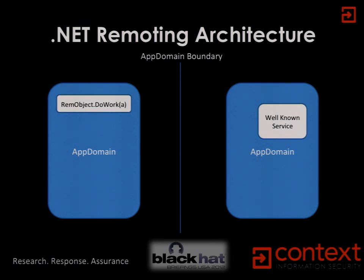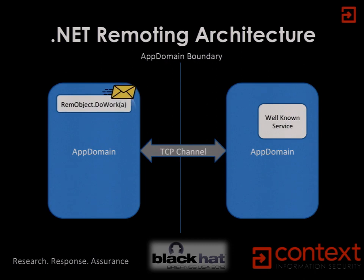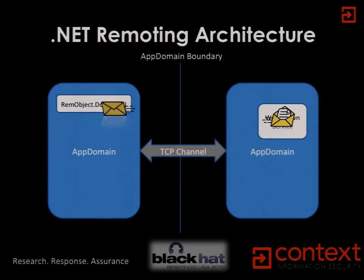If you want to talk to a remote object — say one of these domains is sitting on a system somewhere on the other side of the world connected over the internet — it will be publishing some sort of well-known service on, say, TCP port 1024. Another app domain creates a TCP channel, packages up the request data with all the parameters, sends it across the link, and the well-known service unwraps that and actions the function call. Any return value gets thrown back across the link.